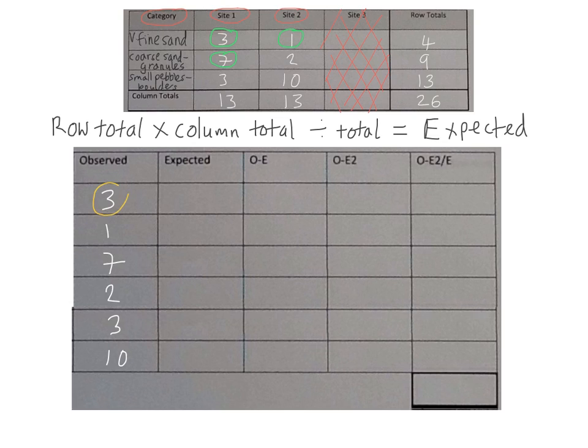Let's look at observed value three to begin with. Our observed value three, our row total is four, times our column total for three, which is thirteen, divided by our total, which is twenty-six, gives us an answer of two. Now let's do the same for our observed data one. Our observed data one here, the row total is four, times the column total, which is thirteen, divided by the total of twenty-six, gives us an answer also of two. And we continue to fill this data in, working it out.